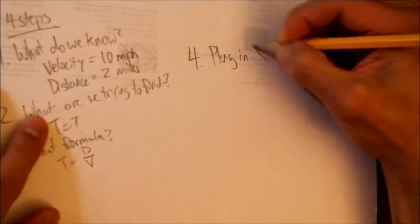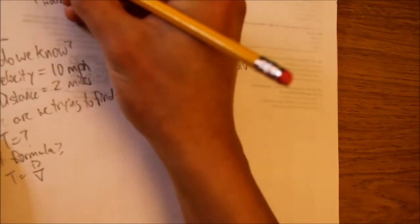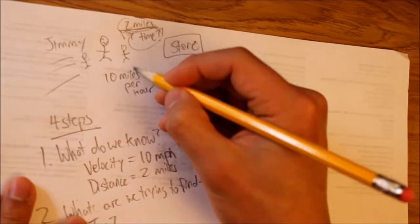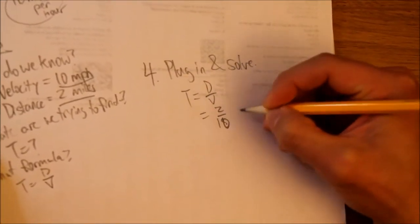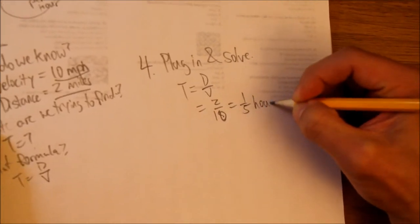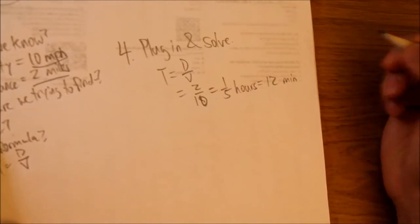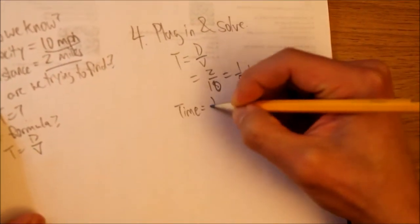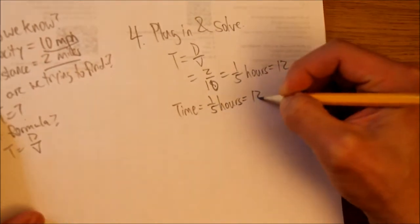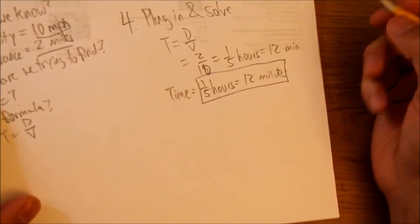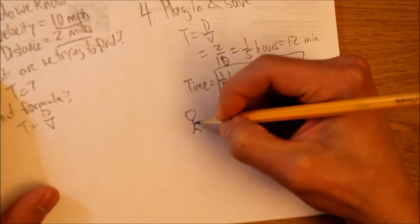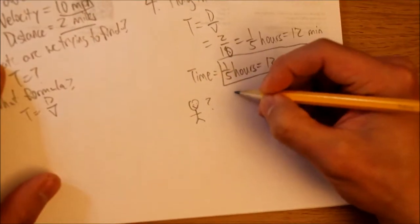Step four: finally, we plug in our numbers and solve. Distance equals two miles, velocity equals 10 miles per hour, so two divided by 10 equals one-fifth of an hour, or 12 minutes. So the answer is time equals one-fifth of an hour, or 12 minutes. It will take Jimmy and his friends one-fifth of an hour, or 12 minutes, to run two miles to the store at 10 miles per hour.